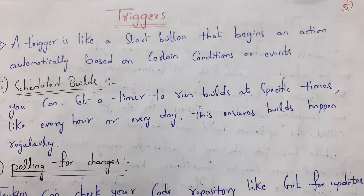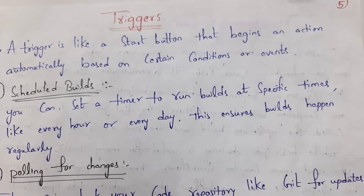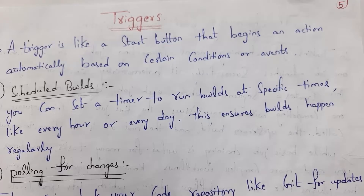First, I will explain what are scheduled builds. Whenever you develop any code, at first we need to compile that code and then we need to test that code. After testing is successful, one artifact will be generated. So compiling code, testing code, and generating artifact — all this comes under the build process. For example, every day at morning 6 o'clock, I need to perform the build process on my server. This is an example of scheduled builds. You can set a timer to run builds at specific times, like every hour or every day. This ensures builds happen regularly.